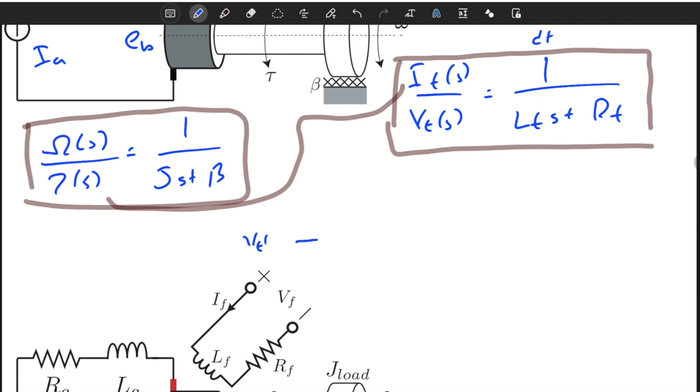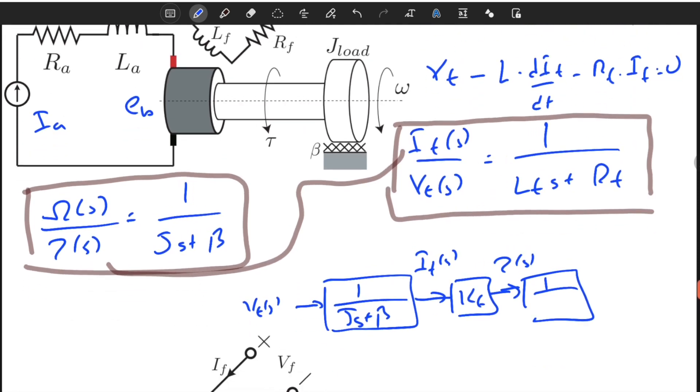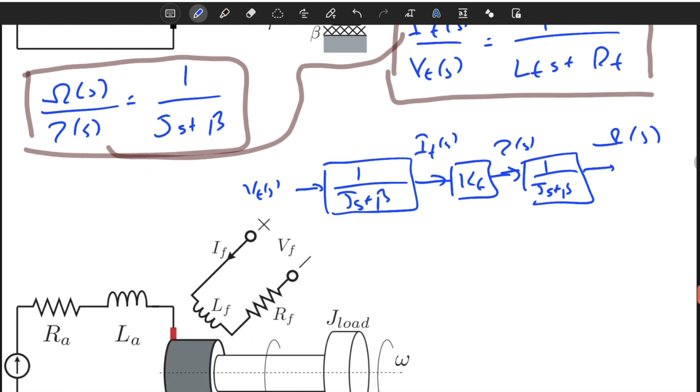Let's try to build a block diagram. We have v_f(s), we have an electrical transfer function which generates current i_f(s). If we multiply with a constant, we generate torque(s). If we process this with a mechanical system, which is equal to J*s plus beta, we generate the output omega(s). As you can see, there is no feedback. This is a simple cascaded program structure.